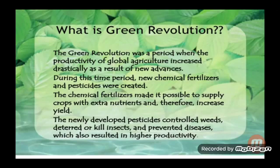What is the Green Revolution? The Green Revolution was a period when the productivity of global agriculture increased drastically as a result of new advances. That period saw major changes in the agriculture sector. New agriculture strategies were used, and this period started in the year 1965. During this revolution, many new techniques along with high yielding variety seeds and pesticides were used.